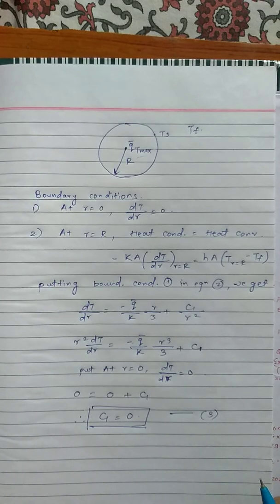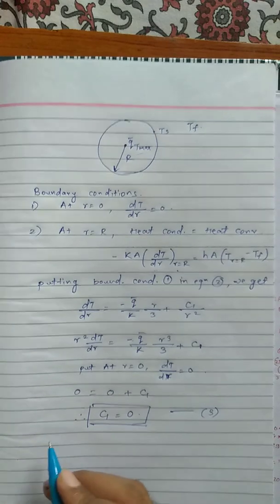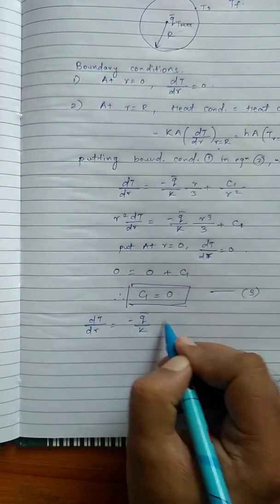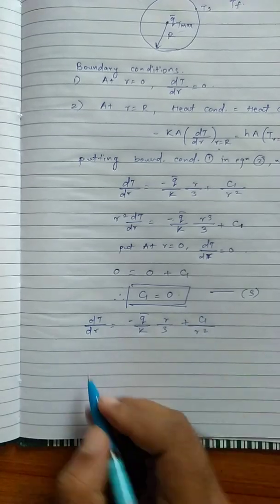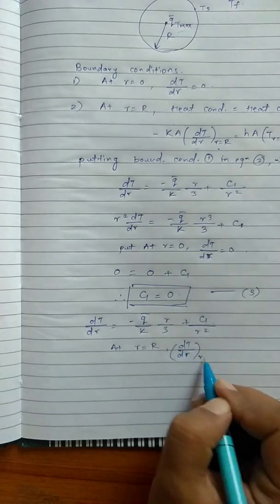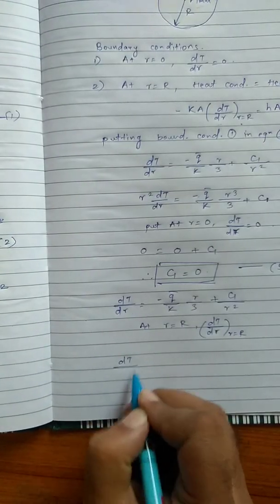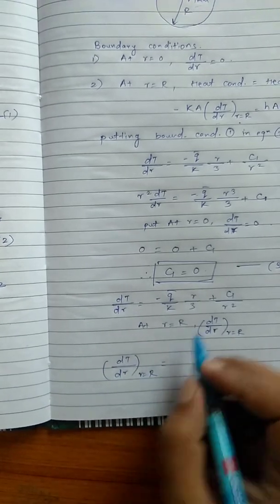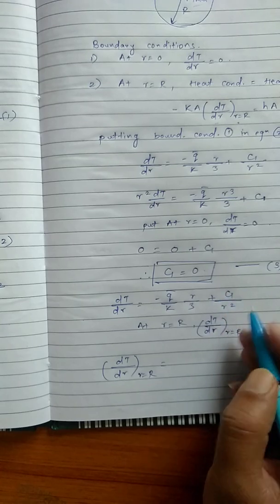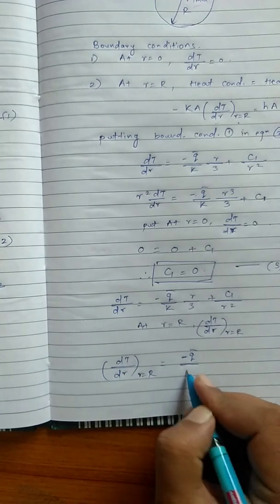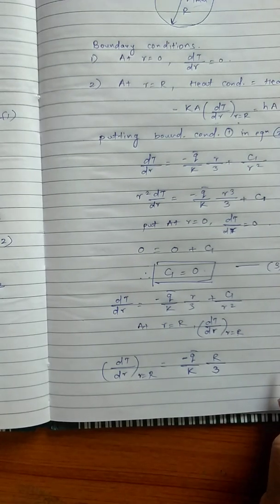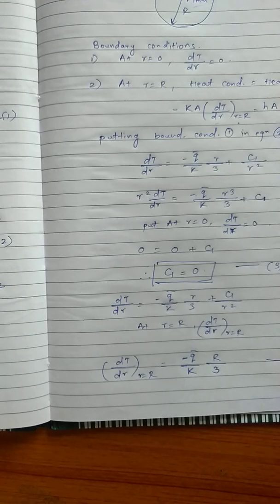Next, we find dT/dr at r = R using the slope equation: dT/dr = -q̄/k·(r/3) + C₁/r². Since C₁ = 0, at r = R this becomes: dT/dr|_{r=R} = -q̄R/(3k). This is equation number 4.